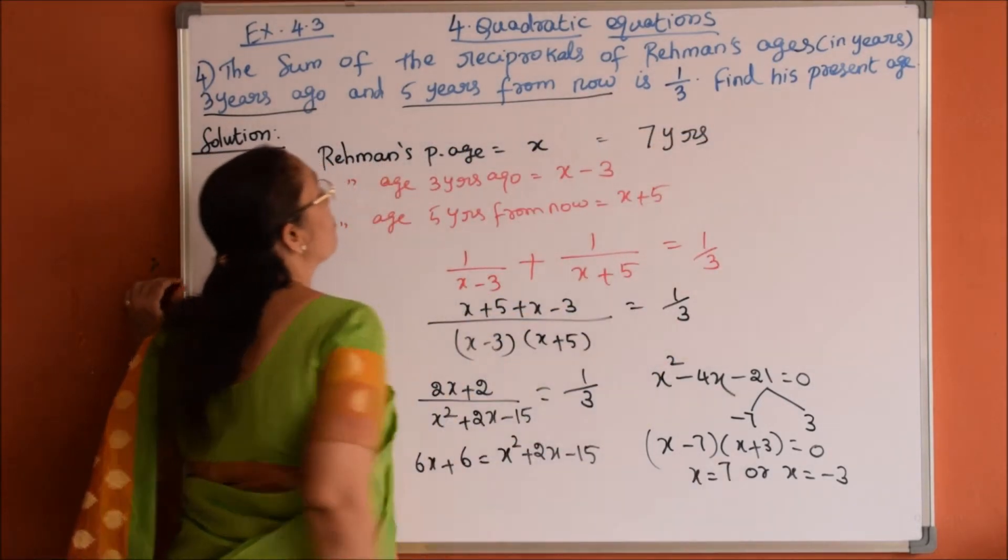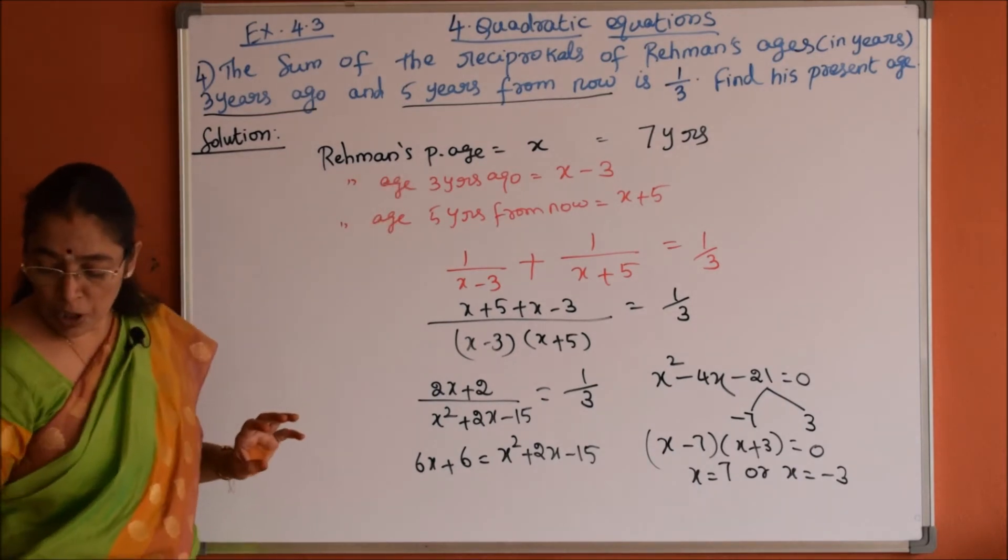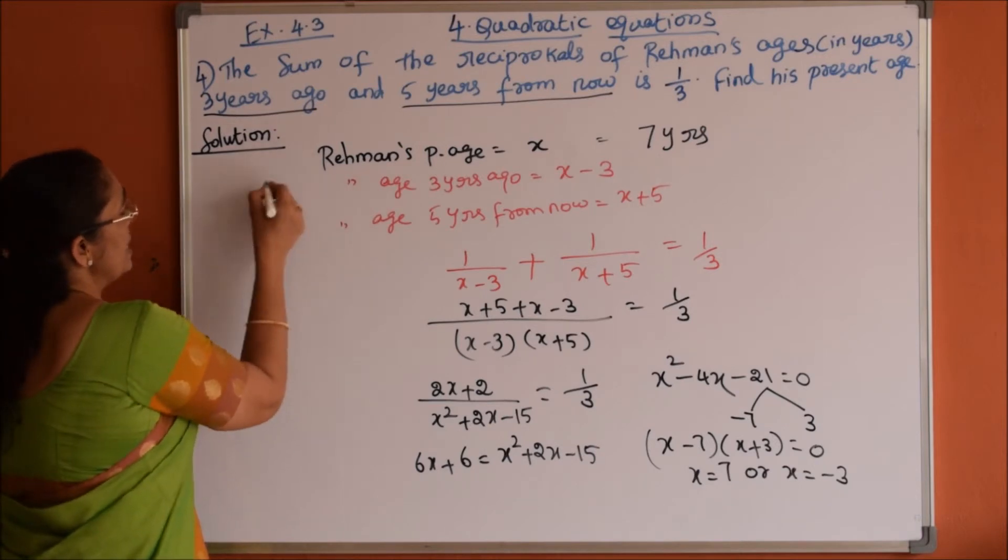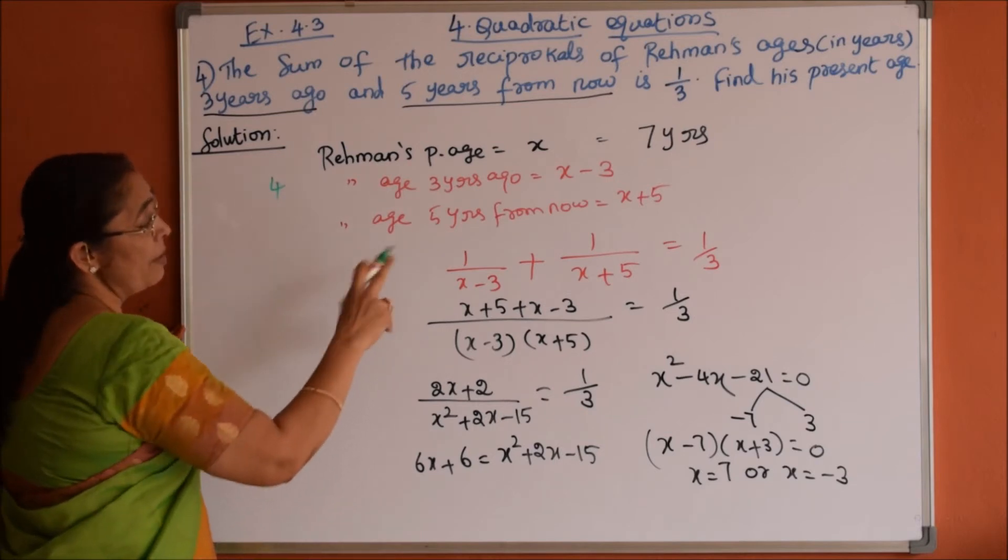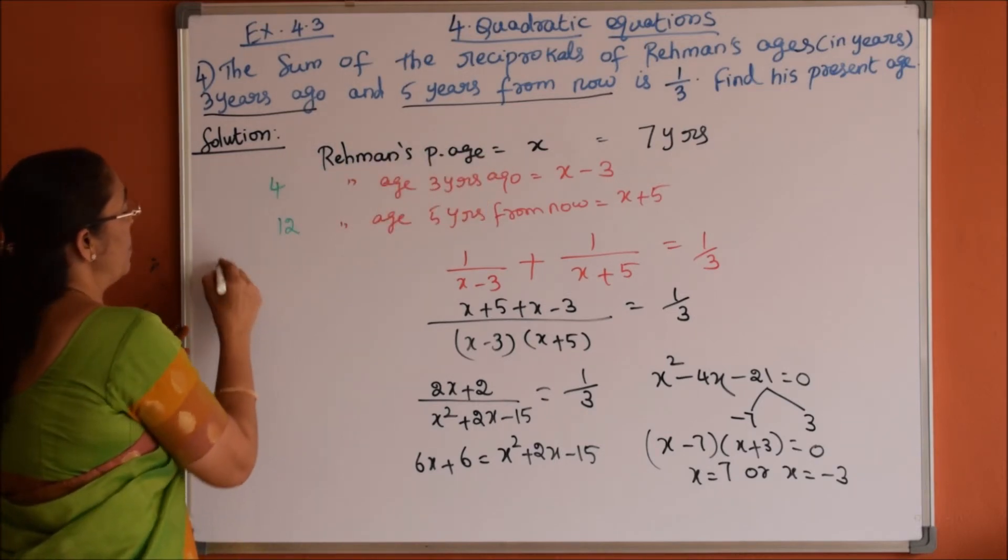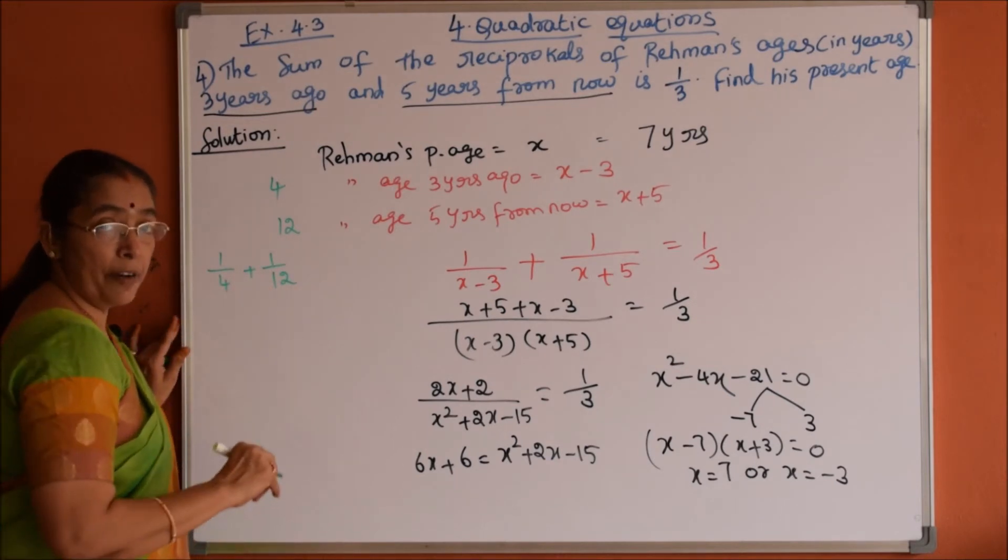Shall we check verification? 3 years ago, how old he was? 7 minus 3. So 3 years ago Rahman was 4 years and 5 years from now he will be 12 years old. Now the reciprocal 1 by 4 plus 1 by 12, sum of the reciprocals.